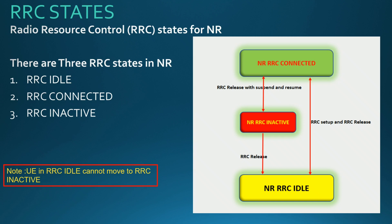RRC states — that is Radio Resource Control states for NR. As we know, for NR three RRC states have been defined: RRC Idle, RRC Connected, and one new one, RRC Inactive. In LTE there are only two — RRC Idle and RRC Connected — so RRC Inactive is the additional state introduced for NR.